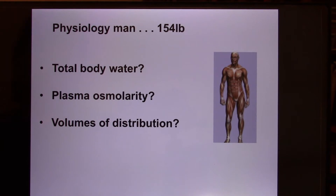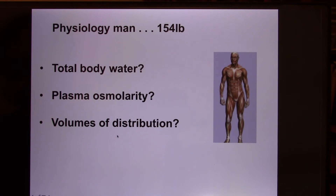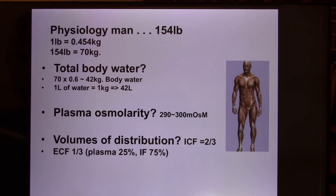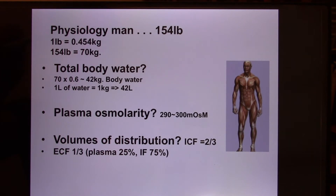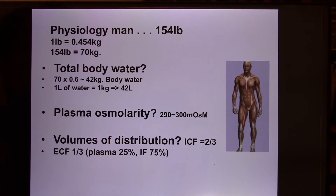Let's look at the standardized person — the physiology man — his total body water, plasma osmolarity, blood volume, and body water distribution. Physiology man is about 154 pounds, so let's convert to kilograms. Because we use the metric system in science, we use kilograms, not pounds. You multiply the pounds by 0.454 and you get 70 kilograms. So if your body weight is 70 kilograms, you are the physiology man.